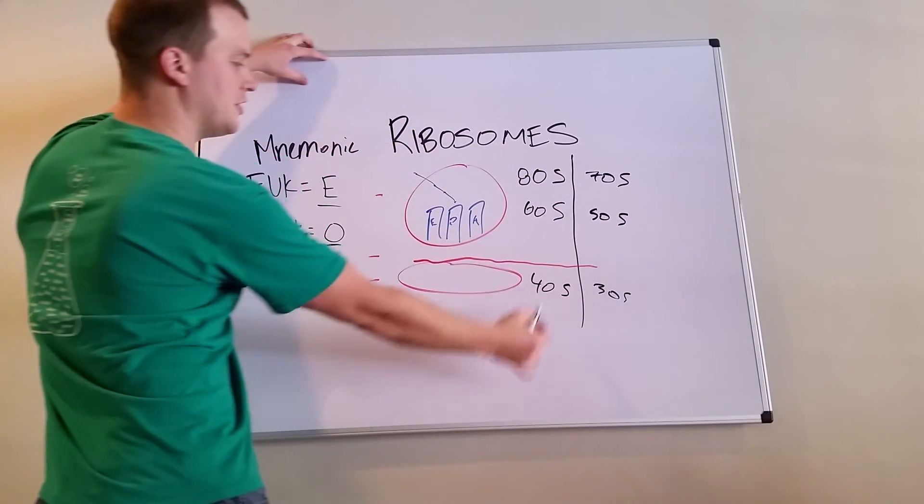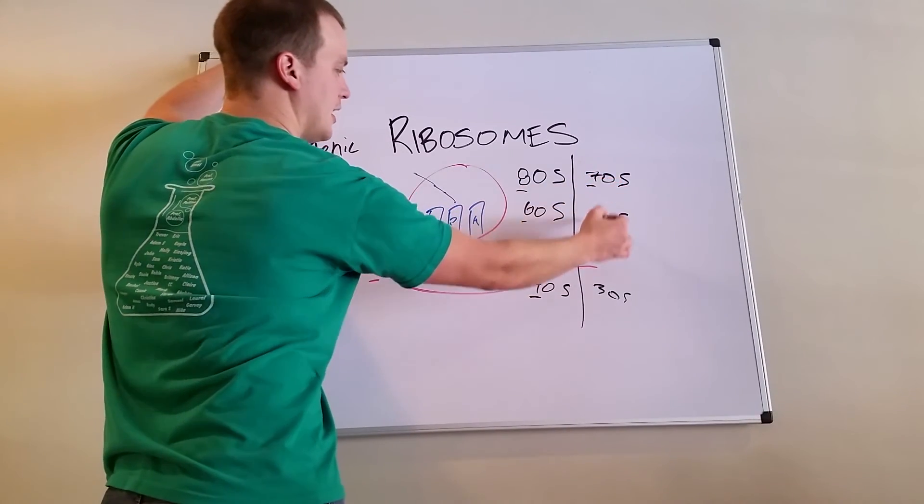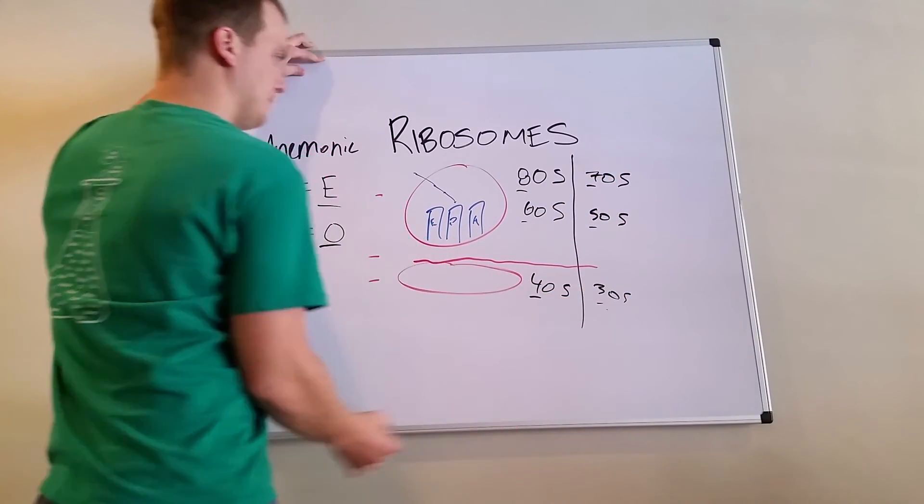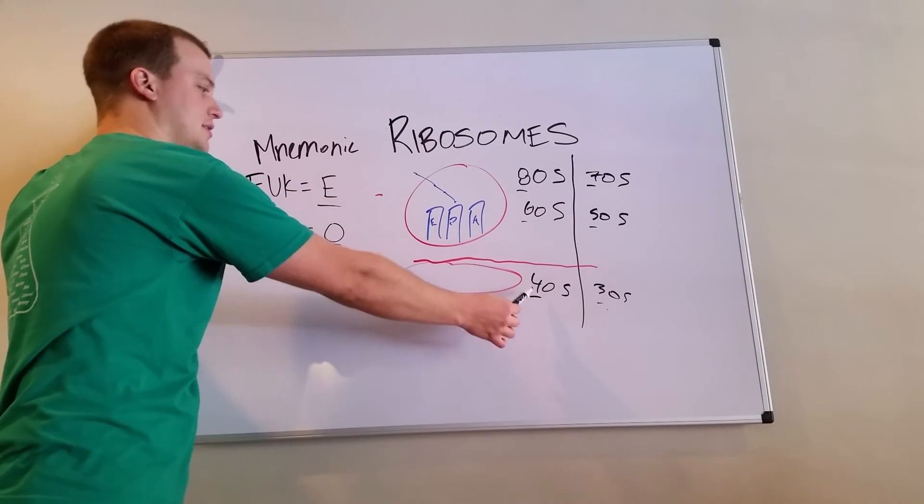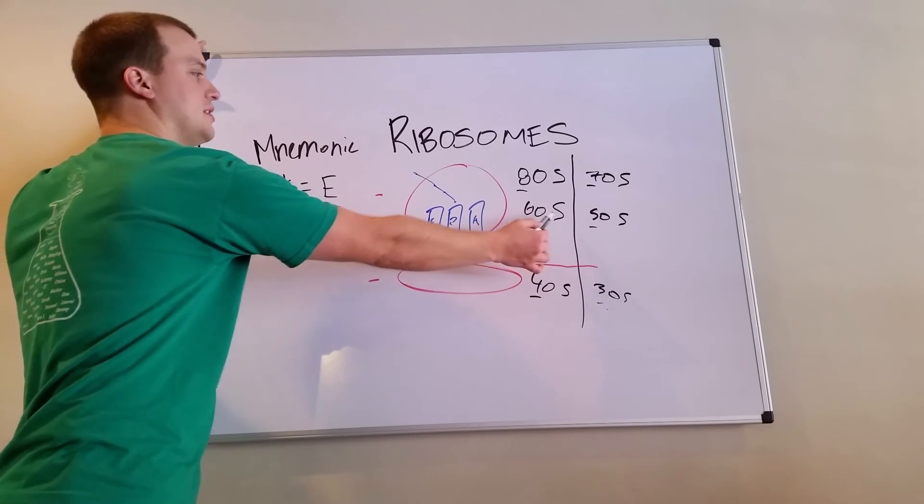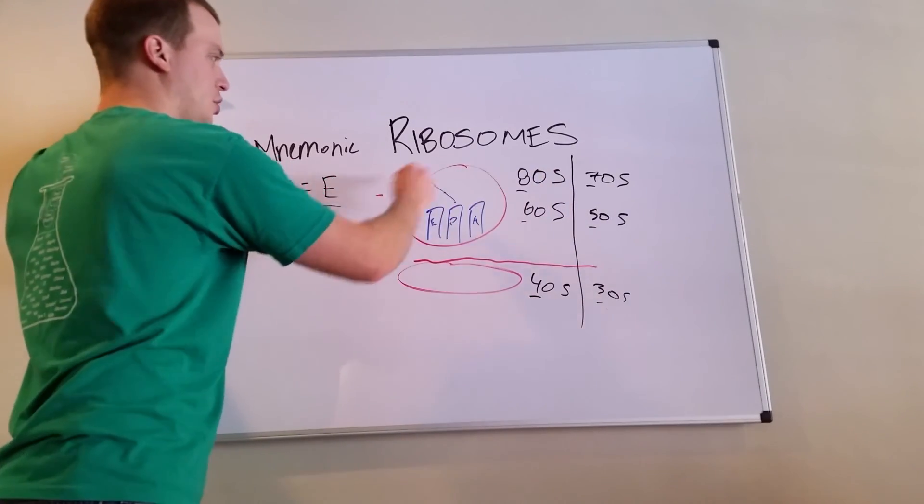Now you can see that these ones here on the left, they all start with evens: even, even, even. And the ones on the right start with odd, odd, odd. Eukaryotes are the evens. So the 40S subunit, which is the smaller one, plus the 60S subunit, the larger one, combine into an 80S total complex.